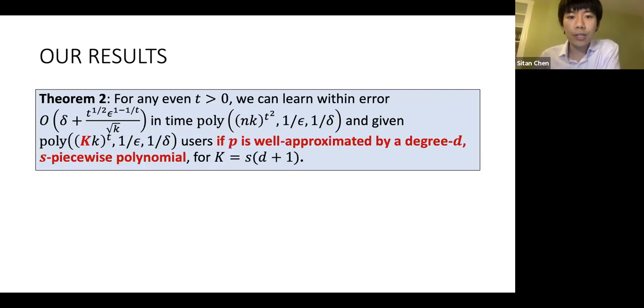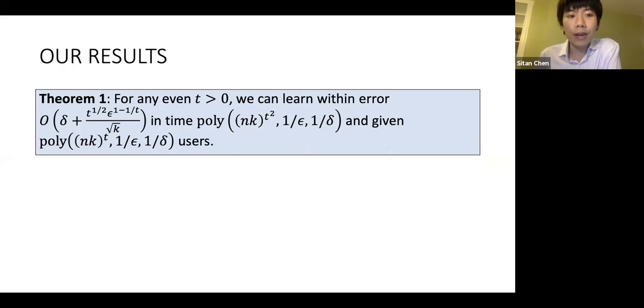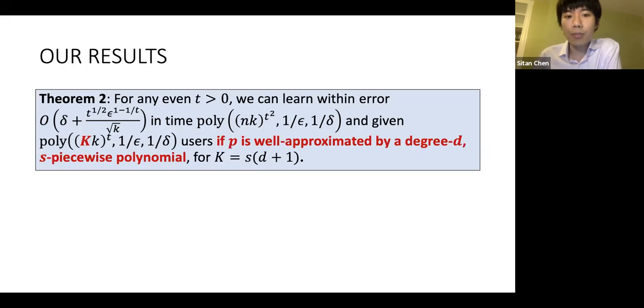Recall that our first theorem showed that in the completely unstructured case, we get the following runtime sample complexity guarantees. Now, if we pass to this structured case where, for instance, our distribution p might be an s-piece polynomial or approximated by one, we can replace the sample complexity guarantee which depended on n with one that depends only on this parameter K.